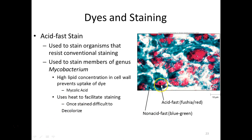In the acid-fast stain image, the reddish-purplish-pink color represents the acid-fast organisms. Any organisms that don't stay stained are called non-acid-fast and take up the counter stain. Different methods use different counter stain colors — blue, green, or grayish — the important thing is it's not the carbol fuchsin color. We do this stain specifically to look for Mycobacteria, which have this specialized cell wall with mycolic acid.